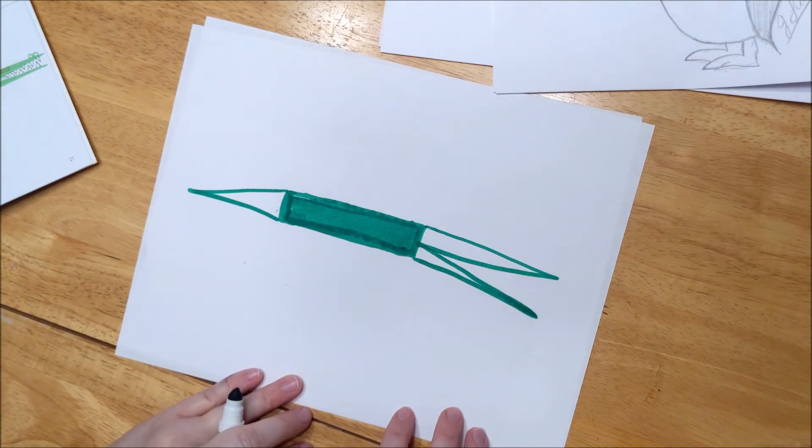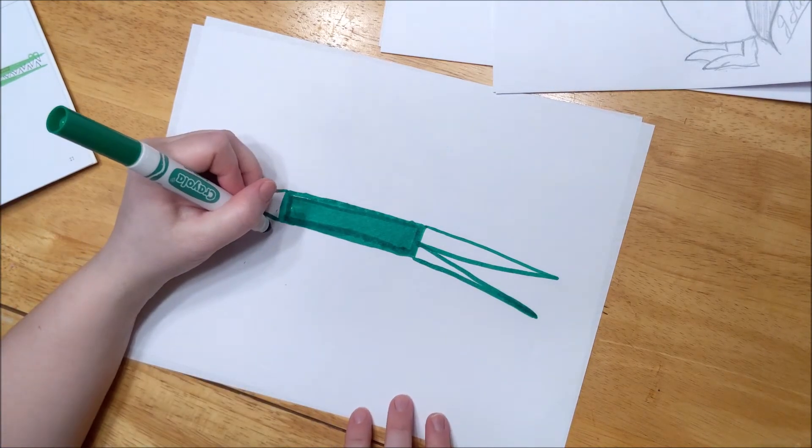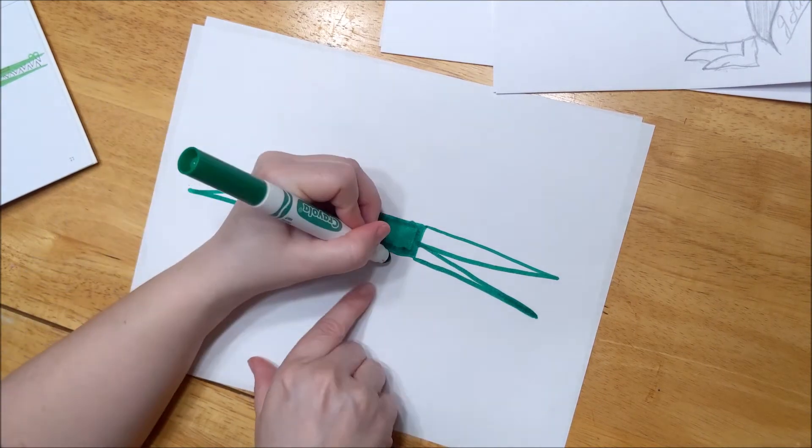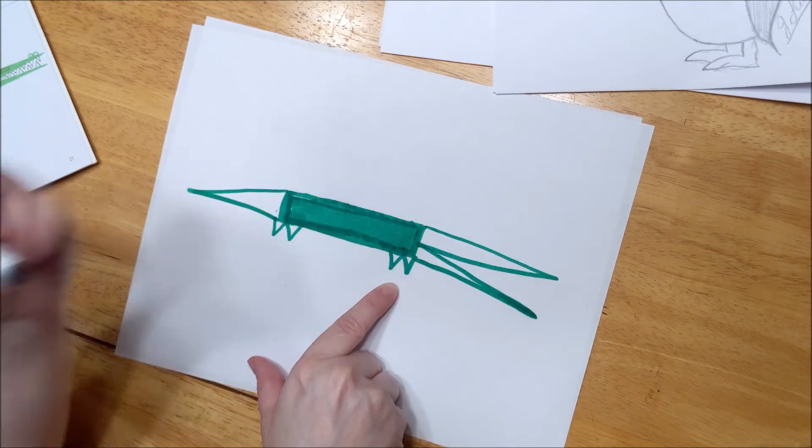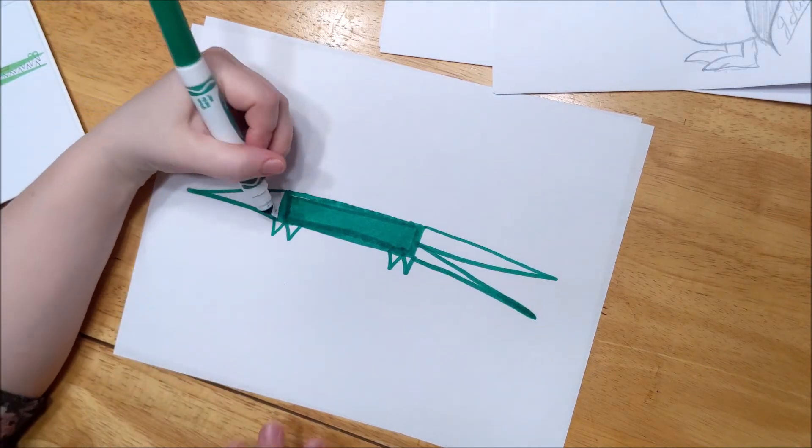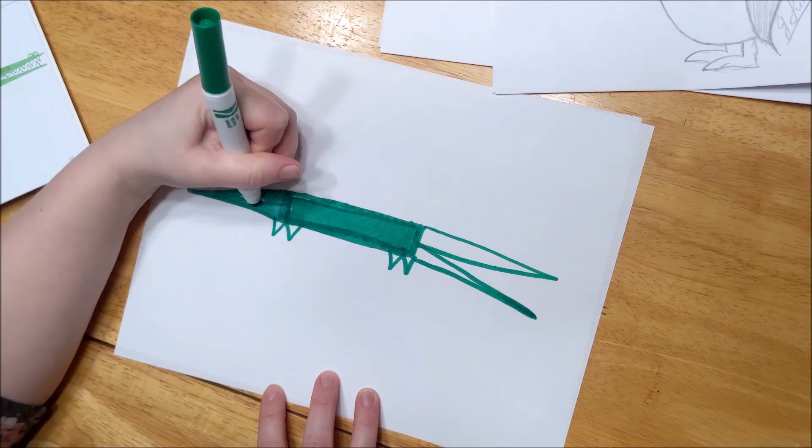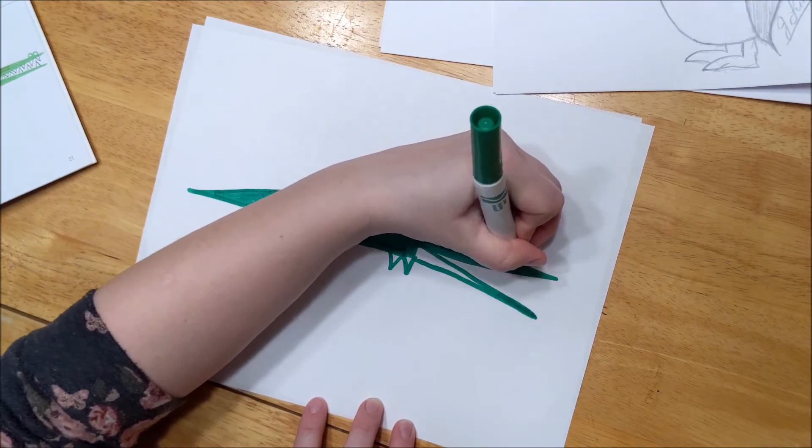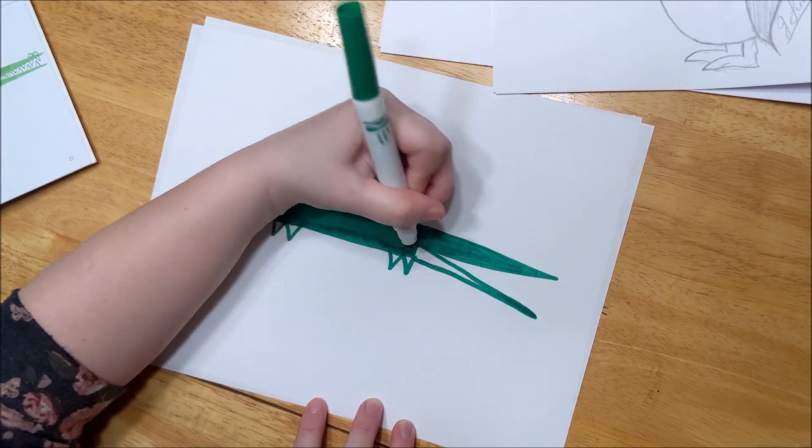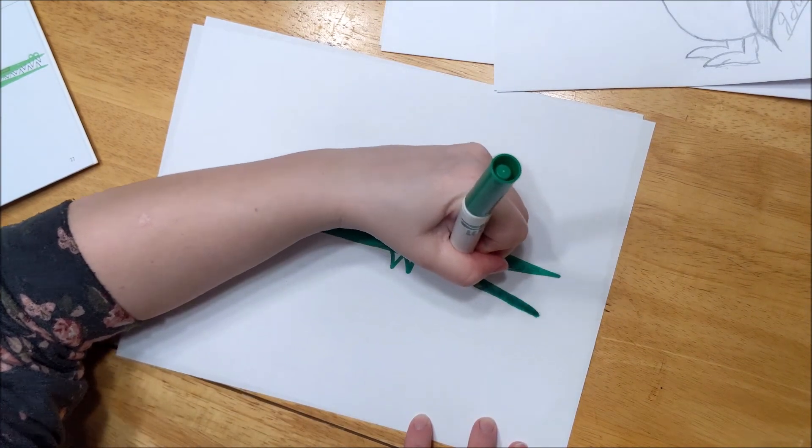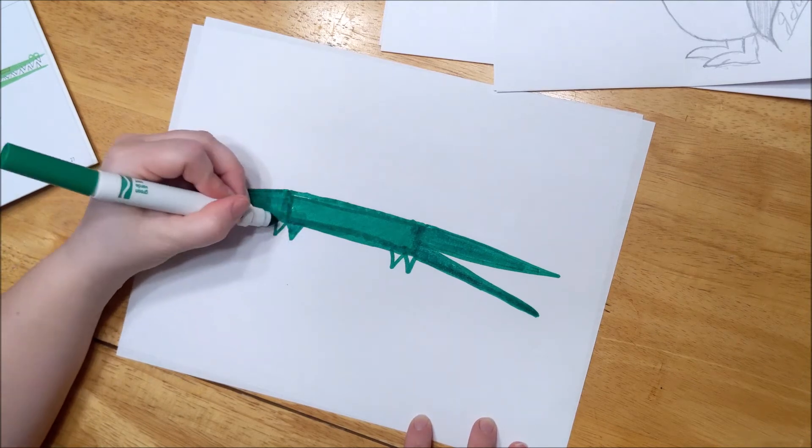And then we're going to add smaller triangles to the bottom, about here. Four of them, two, three, and four. Great. And after that, we're going to color the tail in. And part of his, where his jaws go. We're going to color this part in. And then I'm going to color in part of his feet.